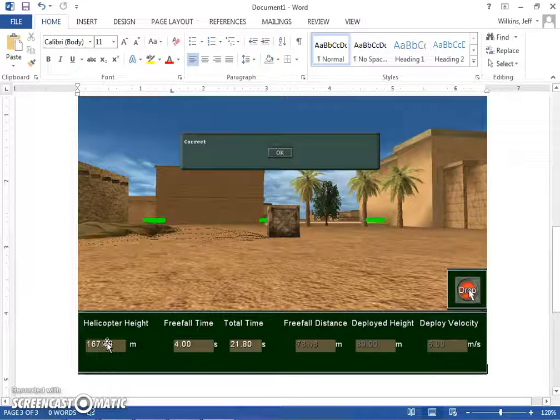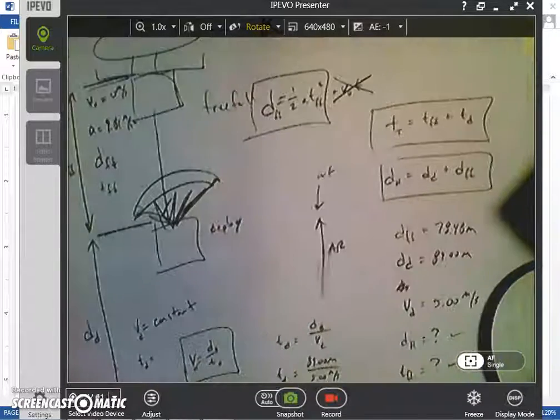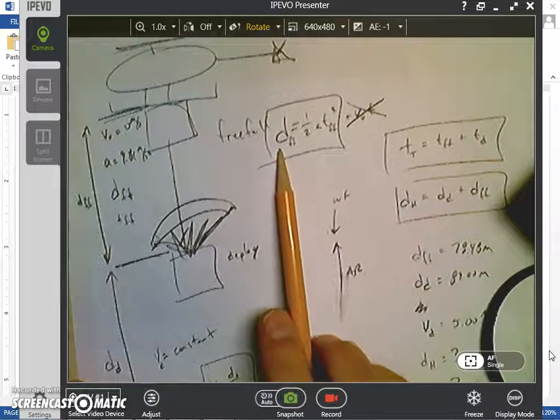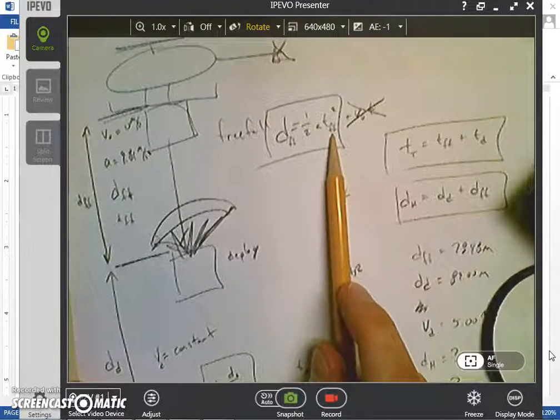Again, those are the equations that you're going to be using. We'll just review them one more time. In freefall, the equation that you're going to be using is the freefall distance is going to be ½at², where t is the freefall time here.